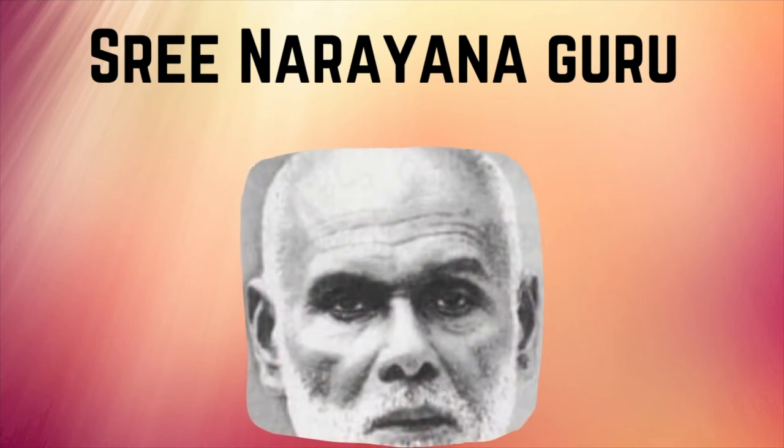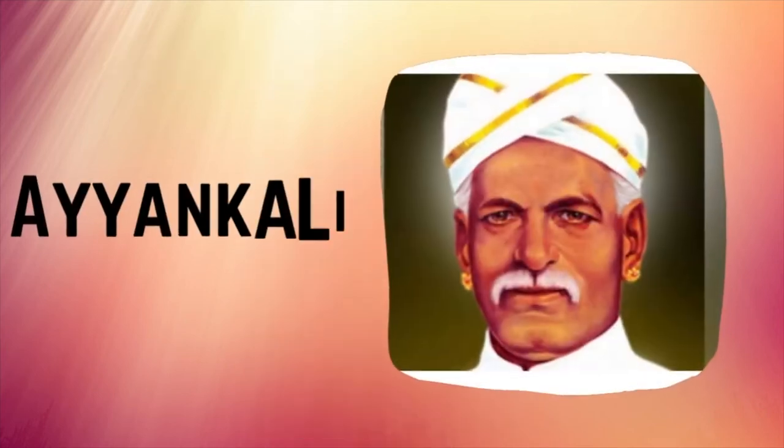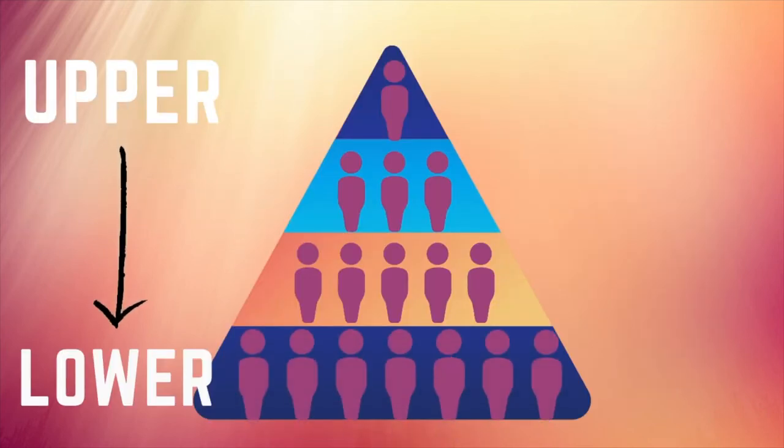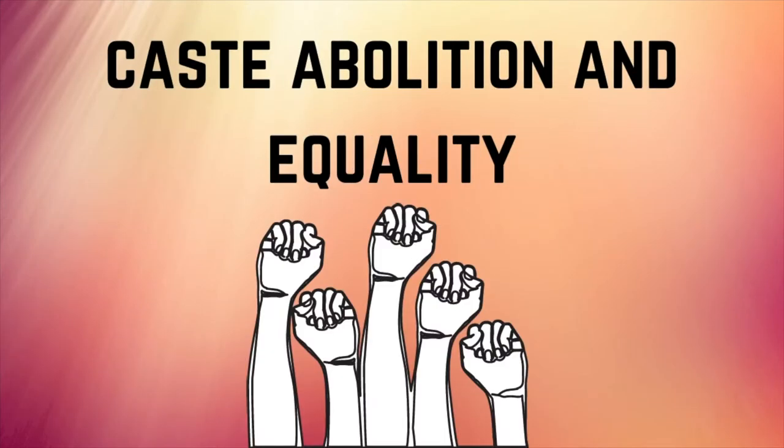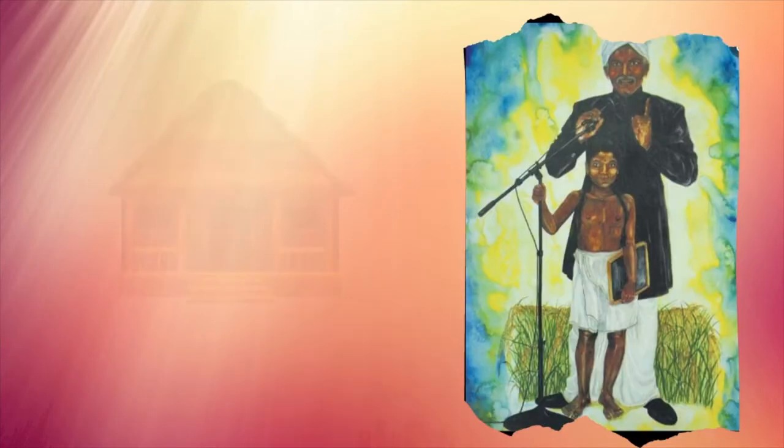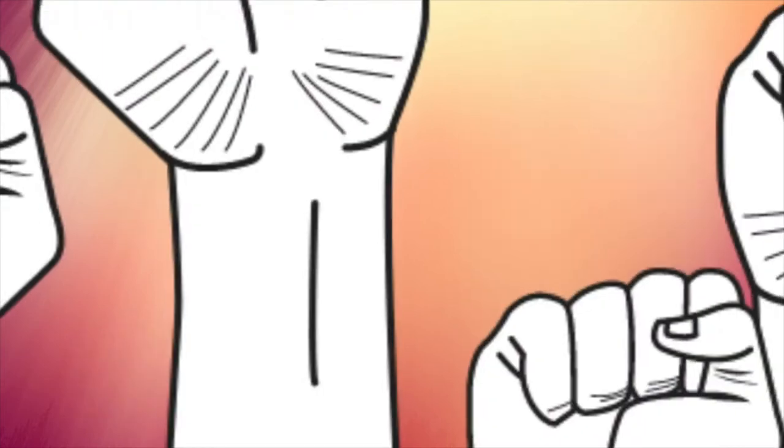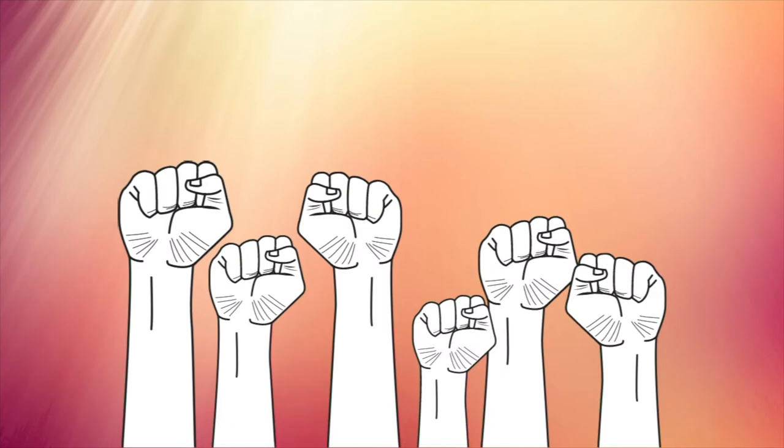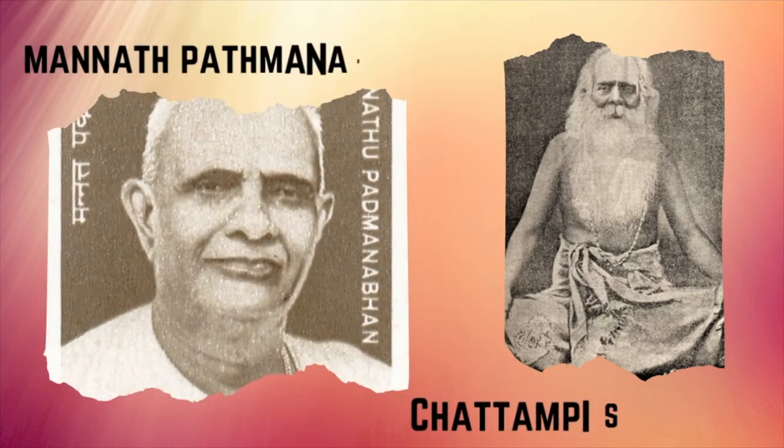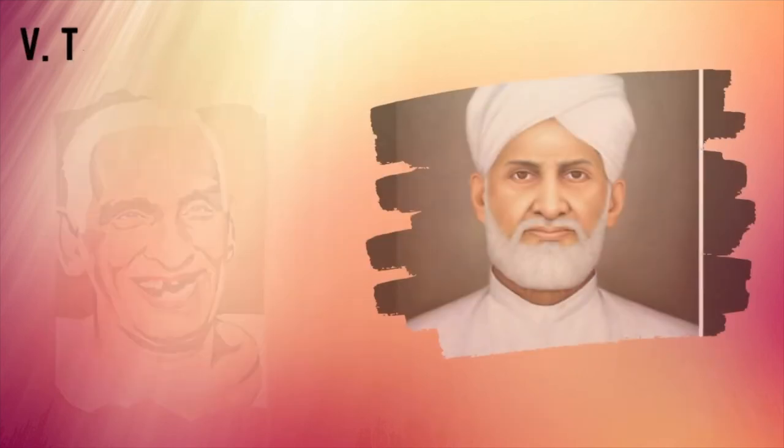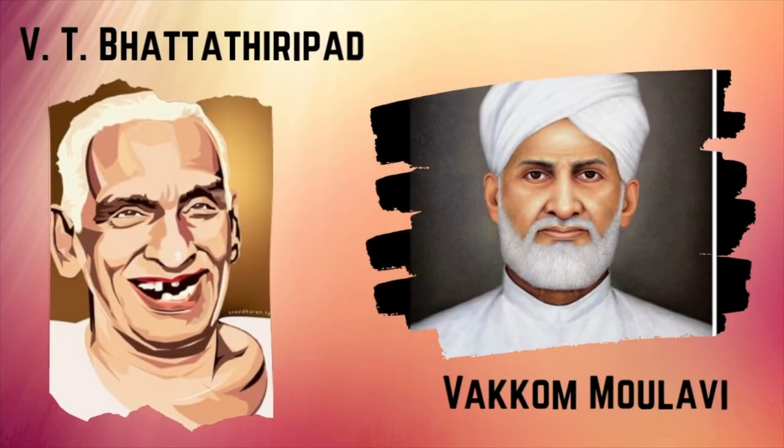There were many prominent leaders like Srinurayanguru and Ayankali, belonging to the so-called lower caste strata, who fought for caste abolition and equality. Ayankali started a school for Dalits, who belonged to the lower caste division, challenging the social norms at that time. Along with them, many other prominent leaders belonging to different communities played their part to reform the society.